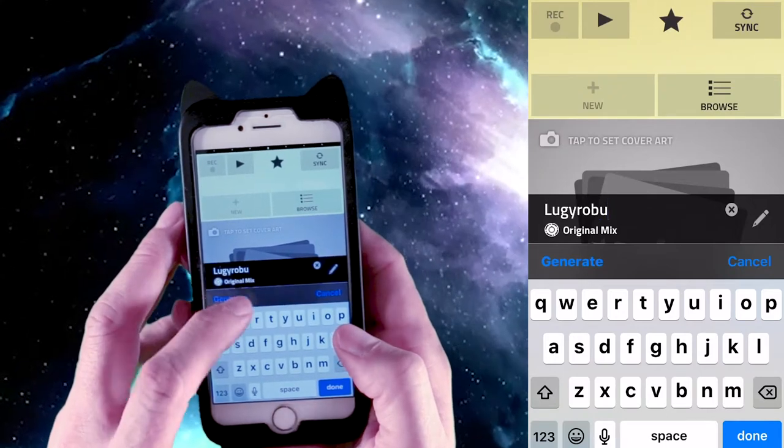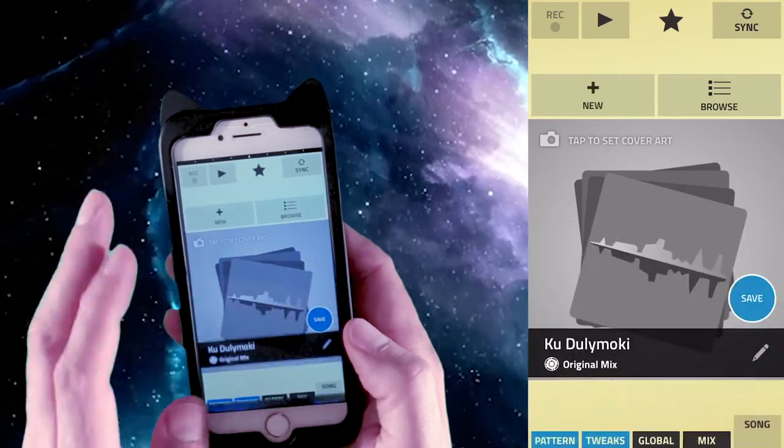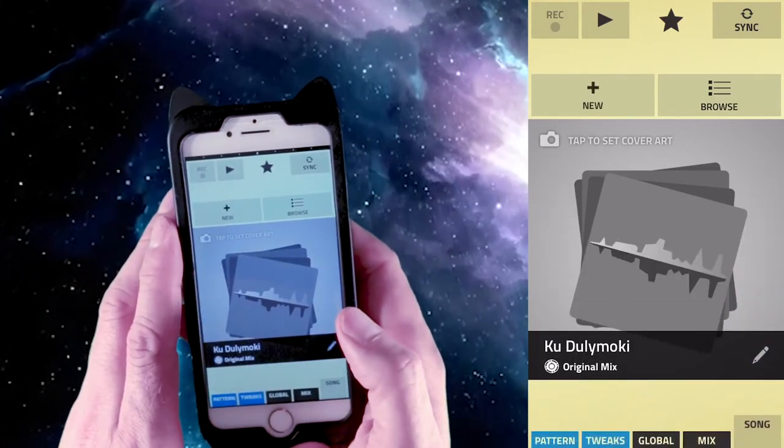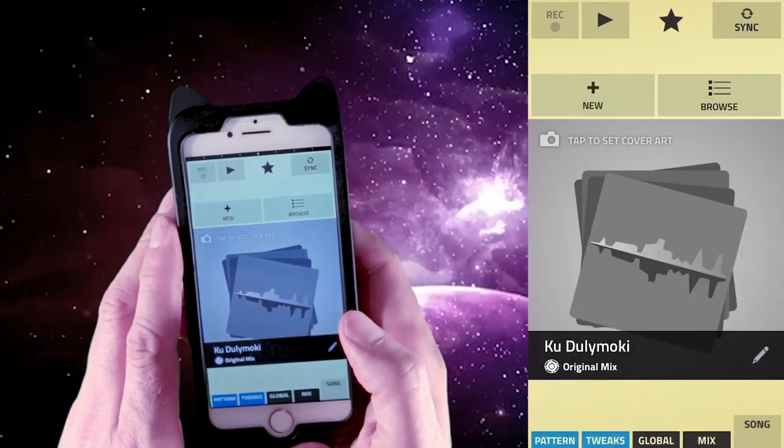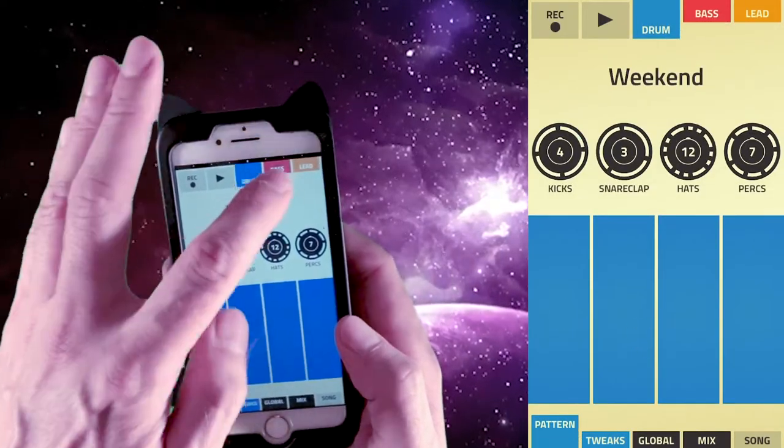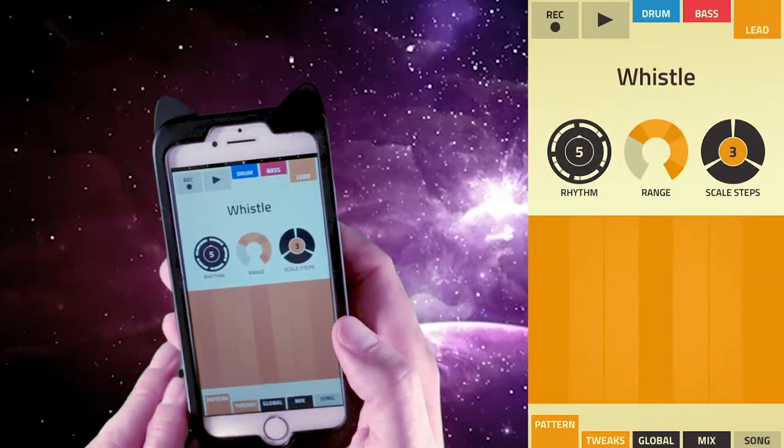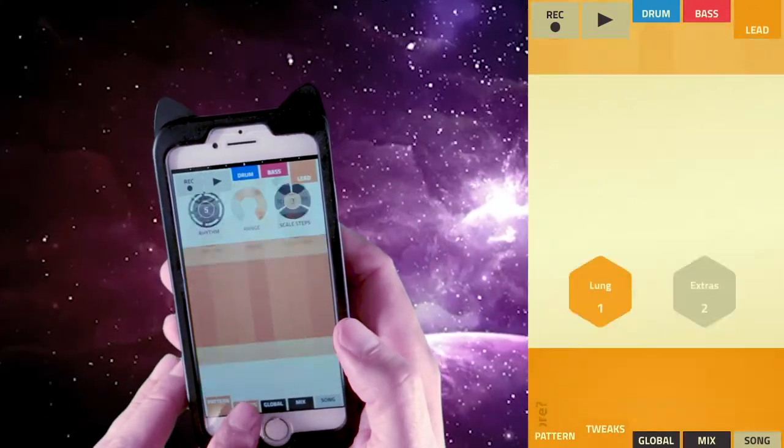The first step is to start a new song by clicking on the plus tab. Tap the blue drum tab on the bottom left, play around with this for a second and just check it out. Next tap the bass tab, check it out, and the lead tab. Down below are the tweaks you can edit, there's the levels.